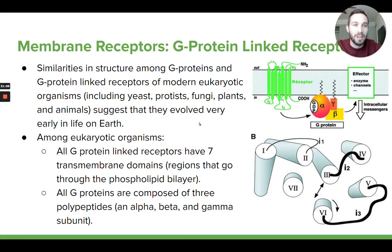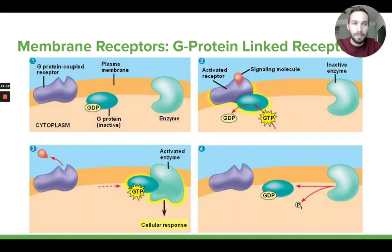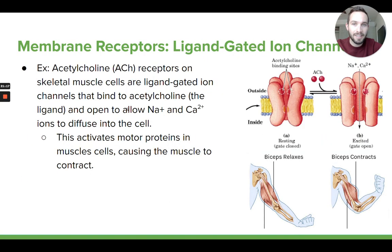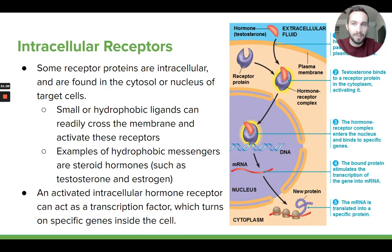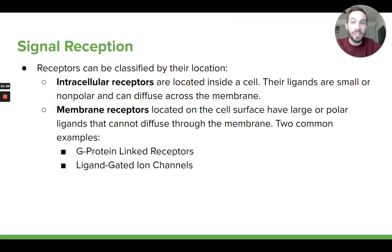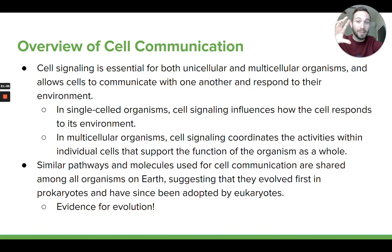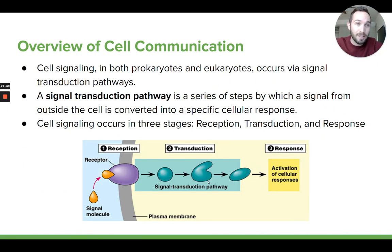That part about evolution isn't the main focus — we'll talk more about evolution at the end of the school year. But that's basically it for topic one. Hopefully these receptors make sense: membrane receptors versus intracellular receptors and how they bind to their ligand and become activated. In topic two, in the next video, we'll look at how a signaling molecule binding to a receptor leads to another long series of steps called a transduction pathway, and how that ultimately produces a cell response. Thank you guys, see you later.